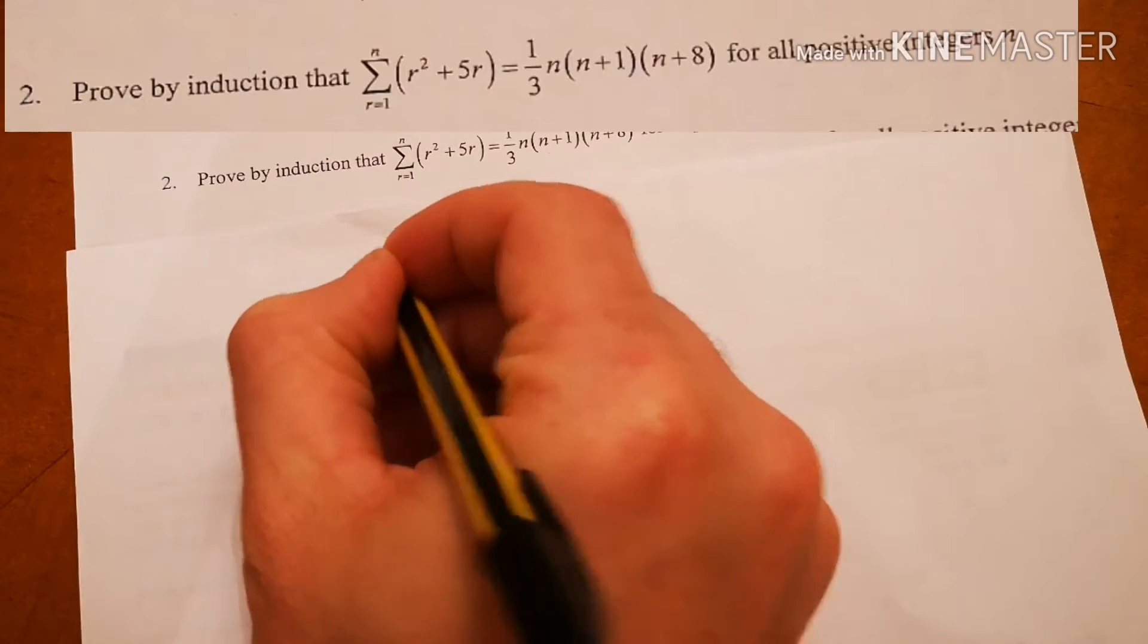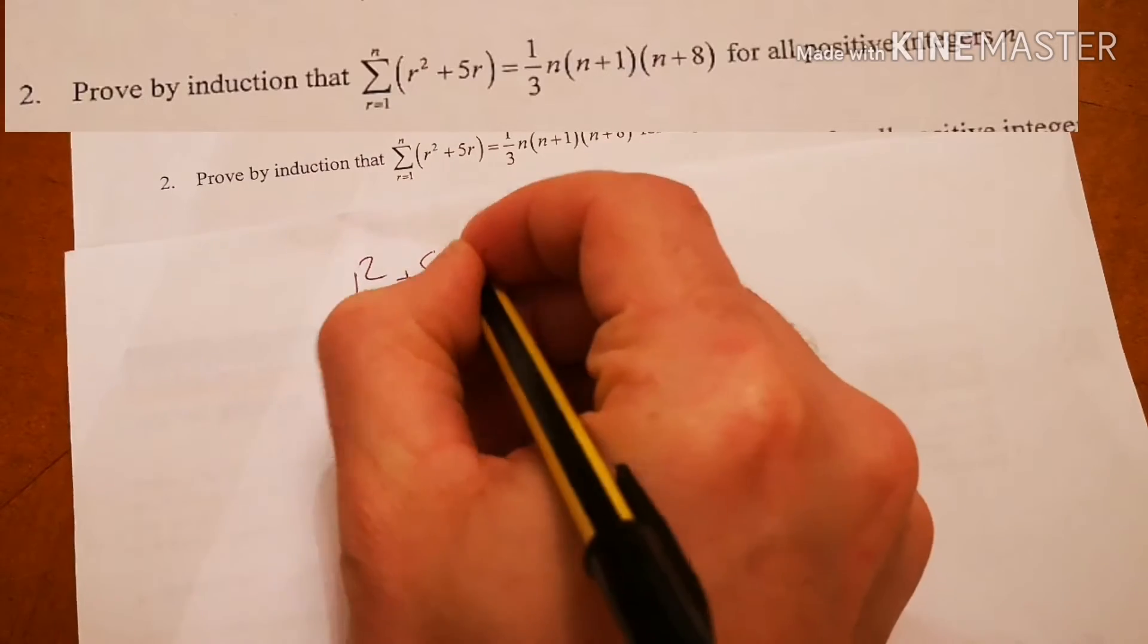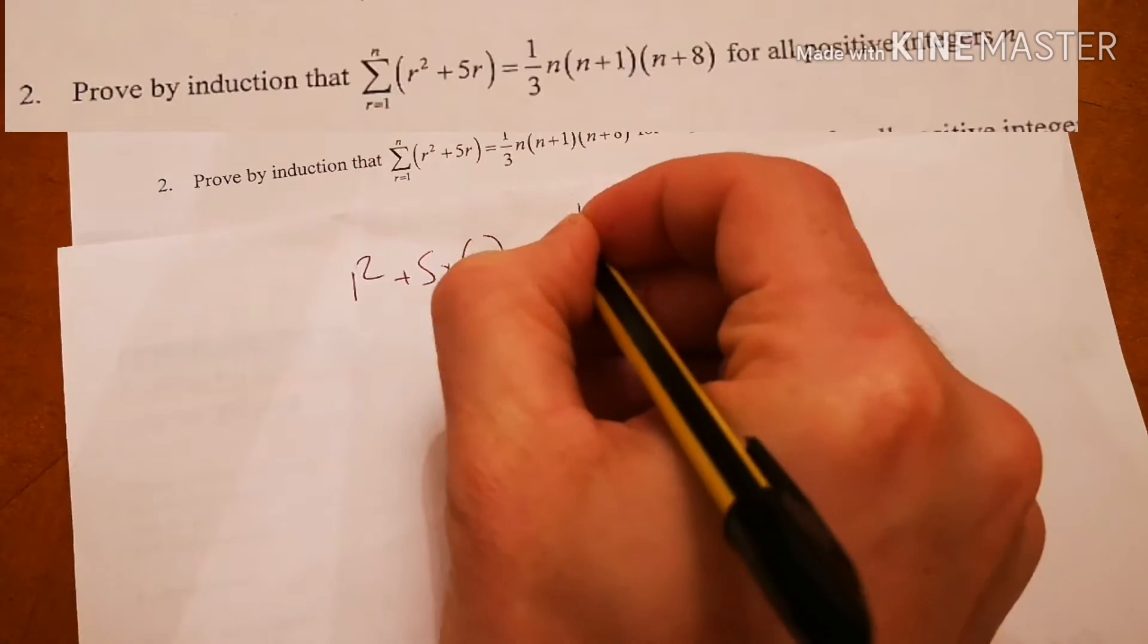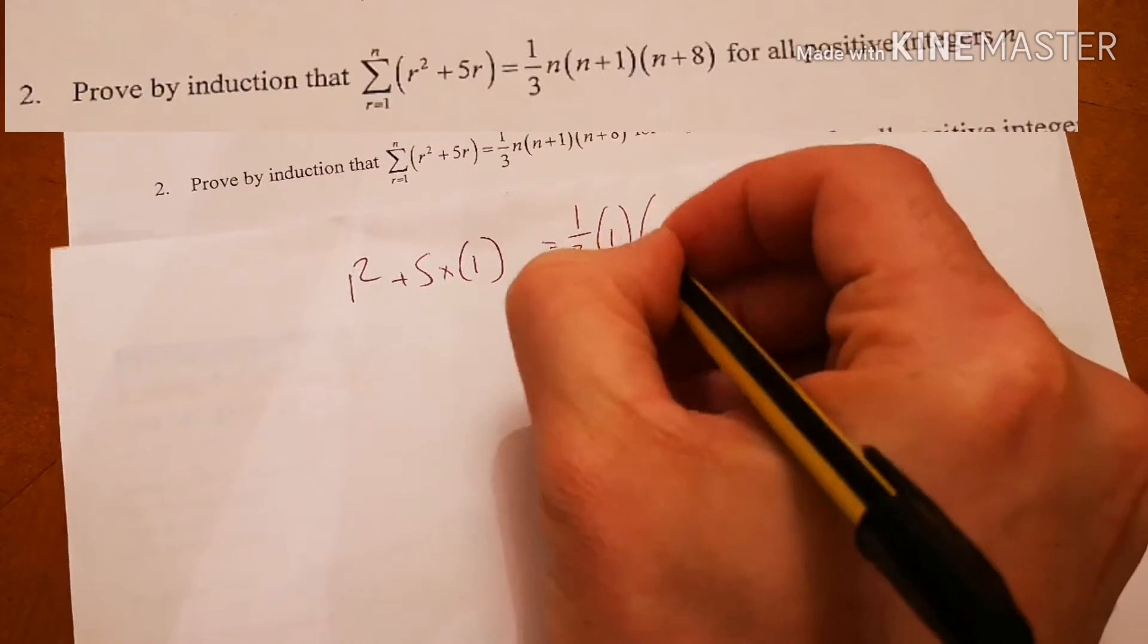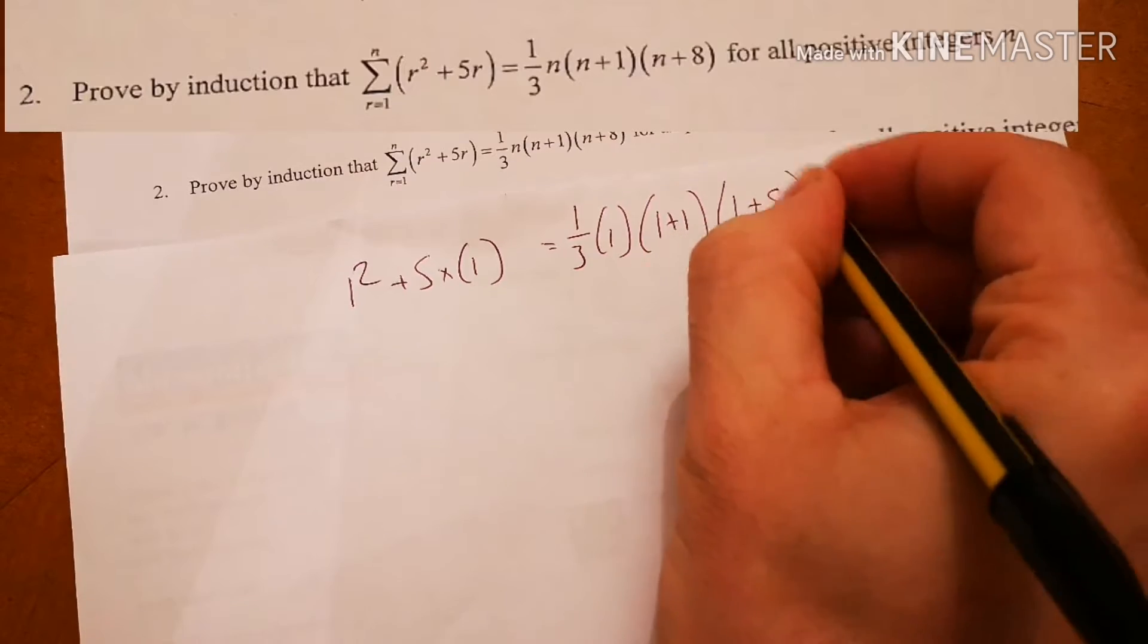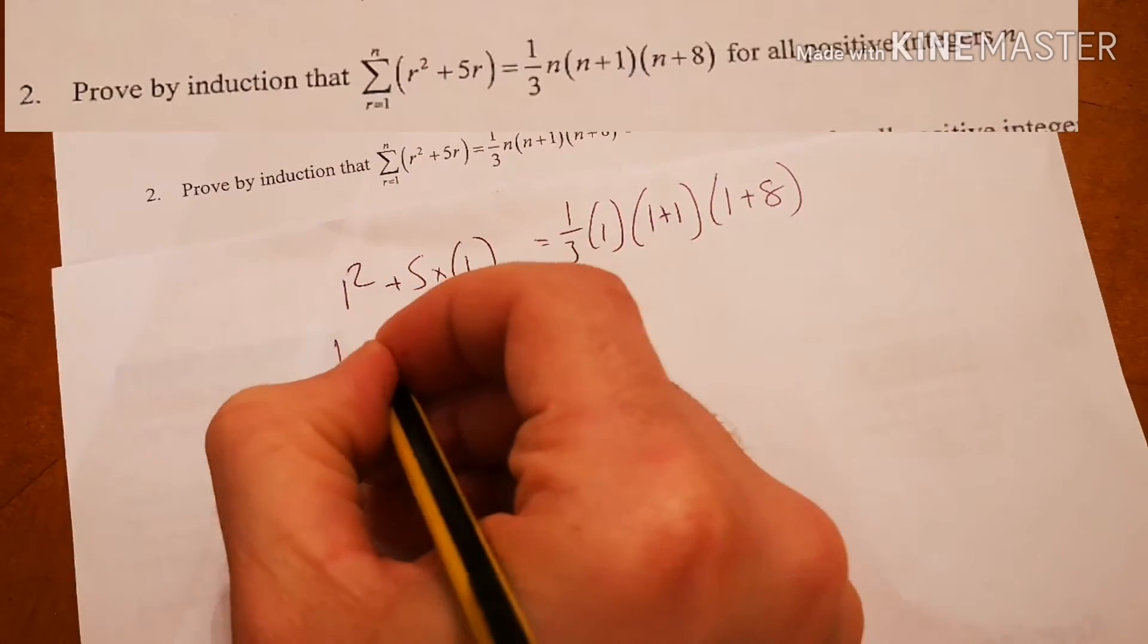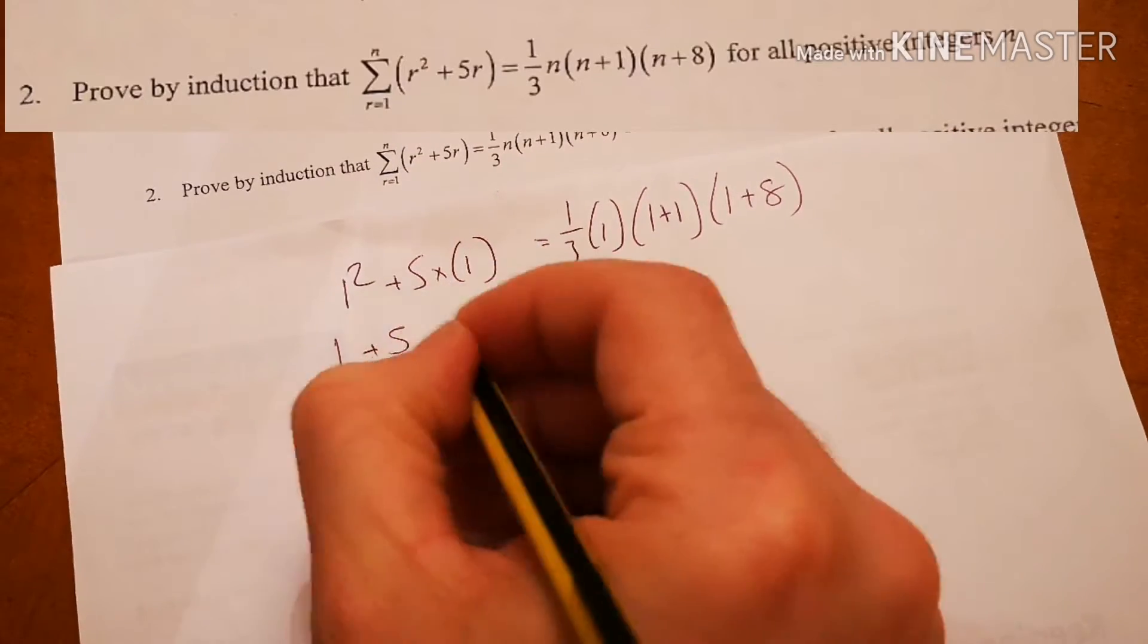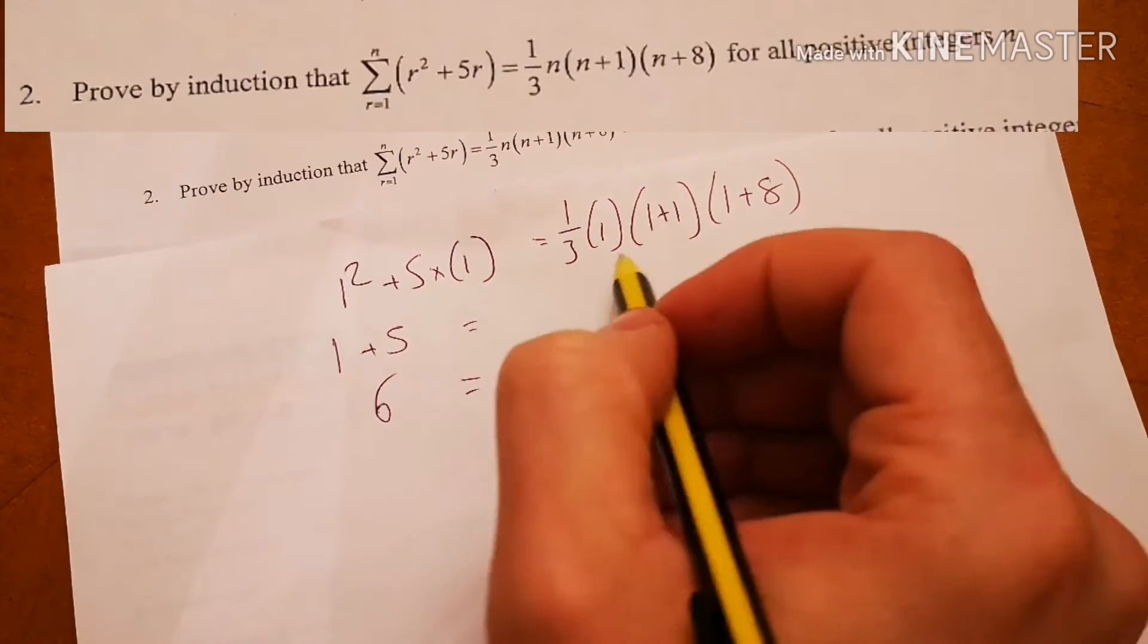So I've got 1 squared plus 5 times 1 equals a third times 1 times 1 plus 1, 1 plus 8. 1 squared is 1, 5 times 1 is 5, so 6, hopefully my right hand side becomes 6.